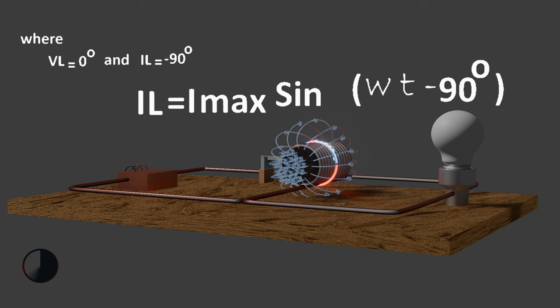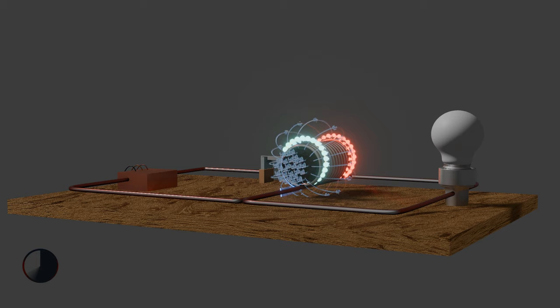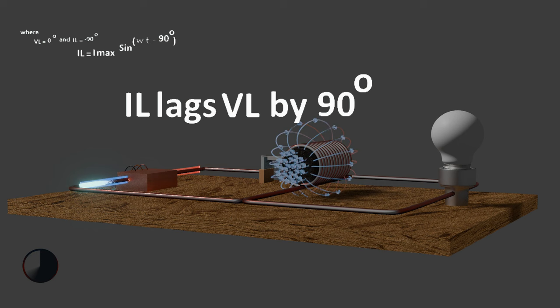Where the angular frequency is in radians per second, and T is in seconds. Since the current always lags the voltage by 90 degrees in a purely inductive circuit, we can find the phase of the current by knowing the phase of the voltage and vice versa. So if we know the value of inductance voltage, then the inductance current must lag by 90 degrees.